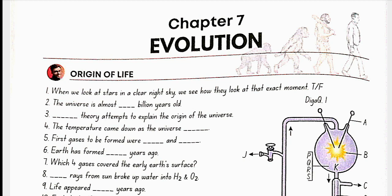Earth was formed 4.5 billion years ago. Which four gases covered the early Earth's surface? H2O, CH4, CO2, and NH3, which is water, methane, carbon dioxide, and ammonia.